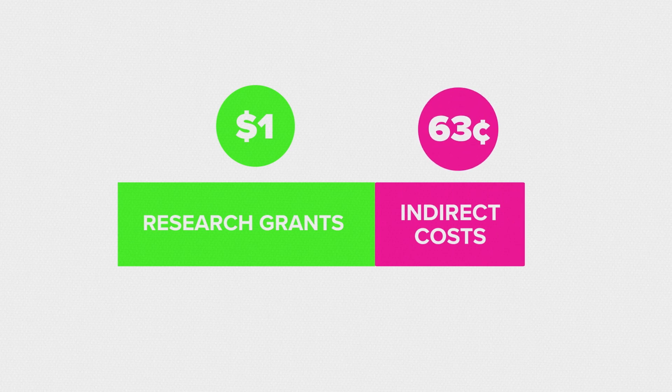For every dollar of research grant money, we know that we need an extra 63 cents in indirect costs, the items we've shown in pink.